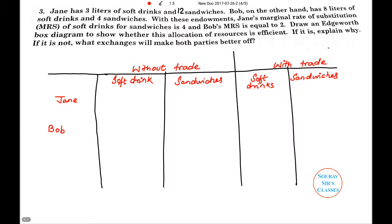Now let us first read the question. There are two candidates here, Jane and Bob. Jane has three liters of soft drink — so three units — and twelve sandwiches. Bob, on the other hand, has eight liters of soft drink and four sandwiches. These are their endowments without trade.